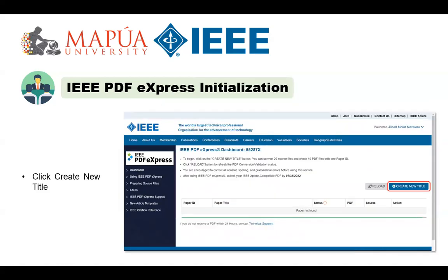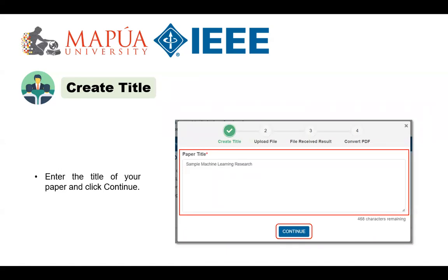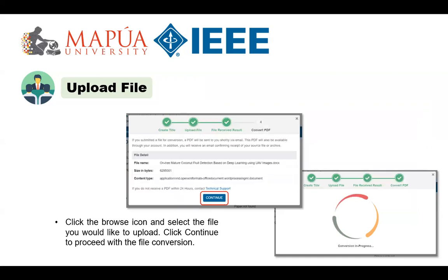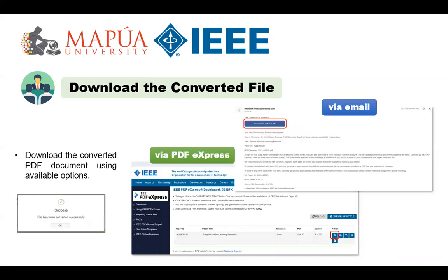Once logged in to IEEE PDF Express, click Create New Title on the landing page. Enter the title of your paper and hit Continue. Click the Browse icon and select the file either in Word, PDF, or PPT format — usually PDF or MS Word is recommended. Click Continue once done and agree to the terms and click Continue to proceed. Wait a couple of minutes or seconds for the conversion to complete depending on your internet connectivity. A notification box will appear showing if the file has been converted successfully. Hit the OK button to proceed with downloading the converted PDF document.